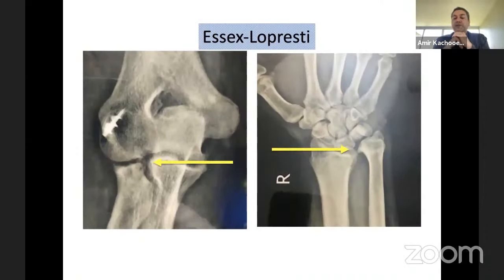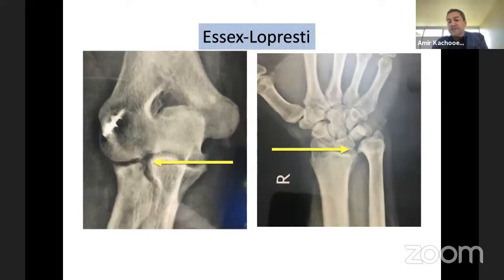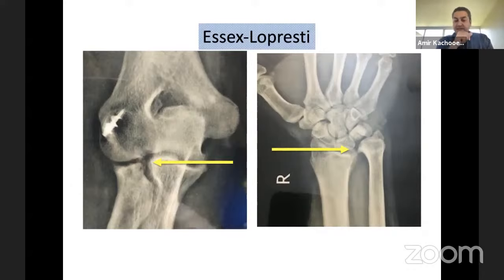They also reported a complication that cannot be addressed simply by repairing the medial site. Essex-Lopresti is a longitudinal instability because of rupture of the central band of the interosseous ligament. On the left side, you can see the radial head excised and the radius has migrated proximally. On the right side, the wrist X-ray shows shortening of the radius, which is not very common but cannot be addressed just with excision and repair of the medial site.